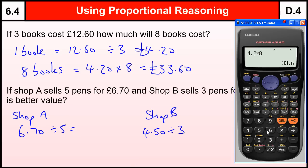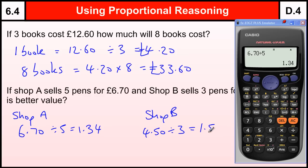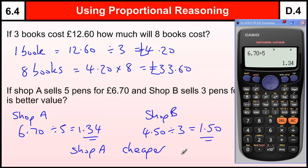£6.70 divided by five gives us £1.34. For Shop B, £4.50 divided by three — I happen to know that's £1.50. So per pen, Shop A is cheaper. When you're doing this sort of question, you do actually have to state which one is cheaper, which one's better value.